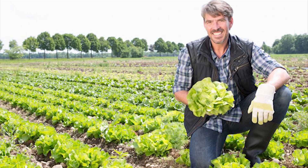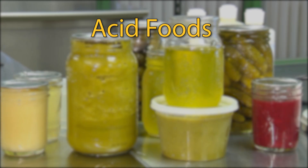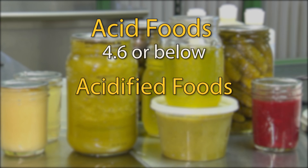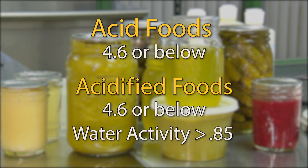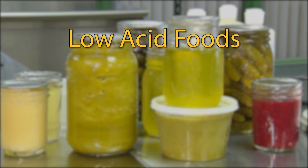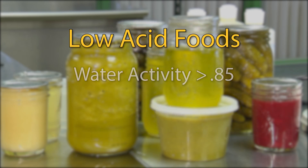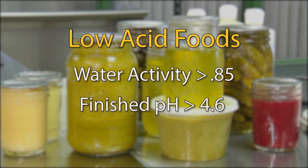Various federal regulations are involved in defining food. Acid foods naturally have a pH of 4.6 or below. Acidified foods are low acid foods that have been adjusted through the addition of acid or acidic foods to a finished equilibrium pH of 4.6 or below. Acidified foods also have a water activity greater than 0.85. Low acid foods, excluding alcoholic beverages, are foods that have a water activity greater than 0.85 and a finished equilibrium pH greater than 4.6.